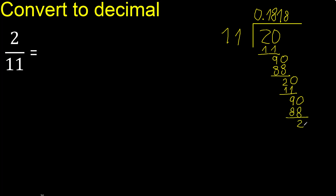Subtract, complete. 90. 11 multiplied by 8 is 88. Subtract, complete. 11 multiplied by 1 is 11. Subtract, complete.